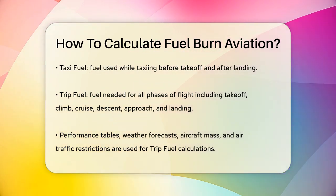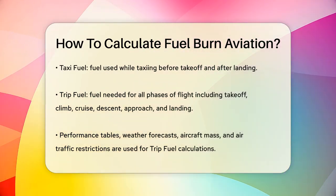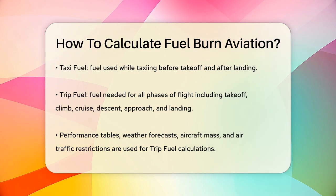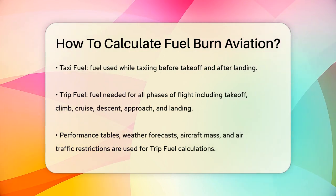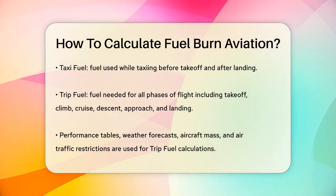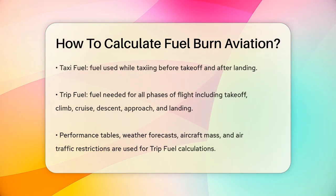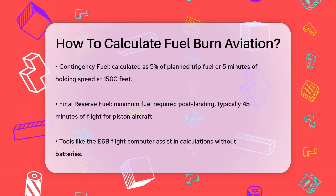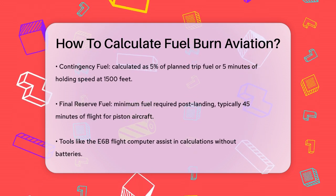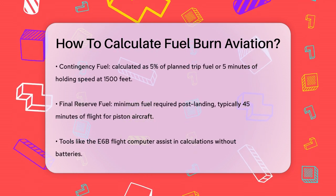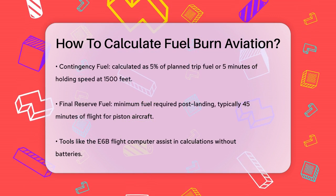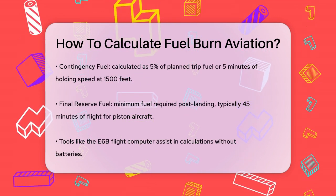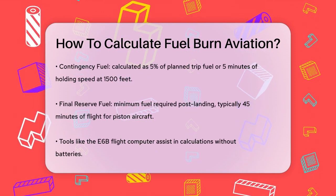Contingency fuel is calculated as the higher of 5% of the planned trip fuel, or 5 minutes of flight at holding speed at 1,500 feet altitude. This compensates for any deviations from the expected fuel consumption.